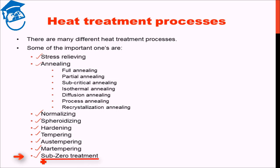Subzero treatment, as the name suggests, is when we take the specimen to very low temperatures below zero degrees Celsius. This is mainly used to convert the leftover retained austenite into martensite. So these are the different heat treatment processes which we'll see. Now let's begin discussing the stress relieving heat treatment process.